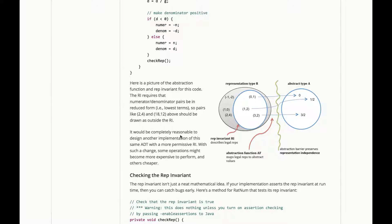Now, it would be perfectly reasonable to design another implementation of the same ADT with a more permissive RI. With such a change, some of the operations might become more expensive to perform, but other ones might become cheaper.